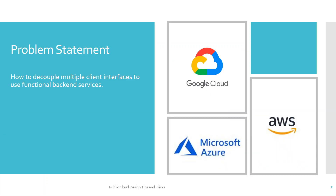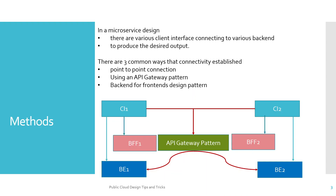Starting with the problem statement: how to decouple multiple client interfaces or multiple client applications to use functional backend services. Whenever you try to create a design and connectivity between a client application and backend services in a microservice design umbrella, there are various client interfaces connecting to various backends — and why? To produce the desired output.